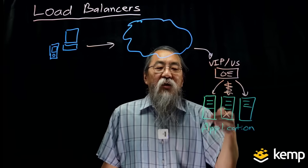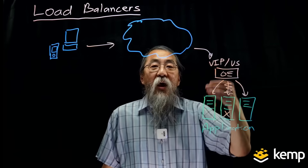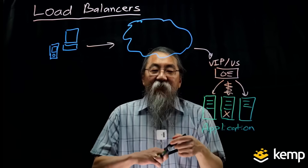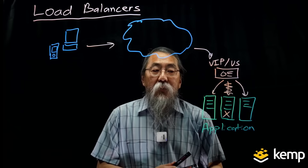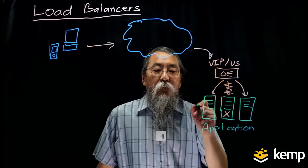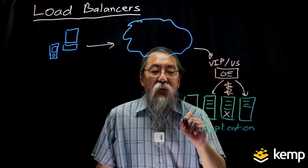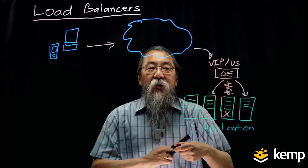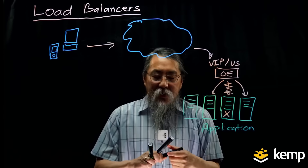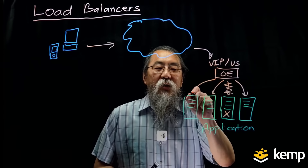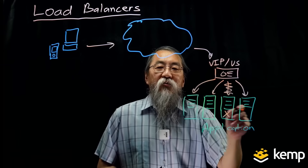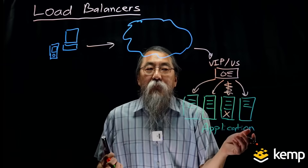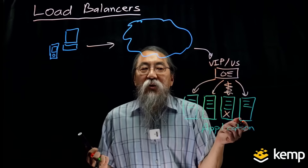When a server comes back into service, the load balancer will add it back into the pool and start sending connections to it. If you need to provide scalability and your application servers are full, you can easily add a new application server, add it to the configuration of the load balancer, and the load balancer will automatically start sending traffic to that new server along with the others, expanding the pool to prevent single points of failure.